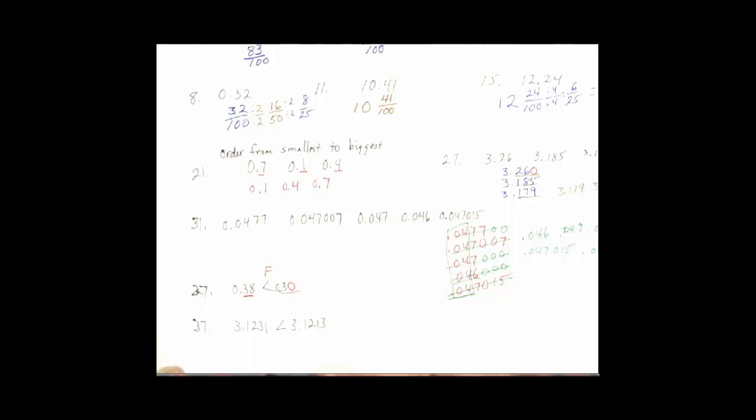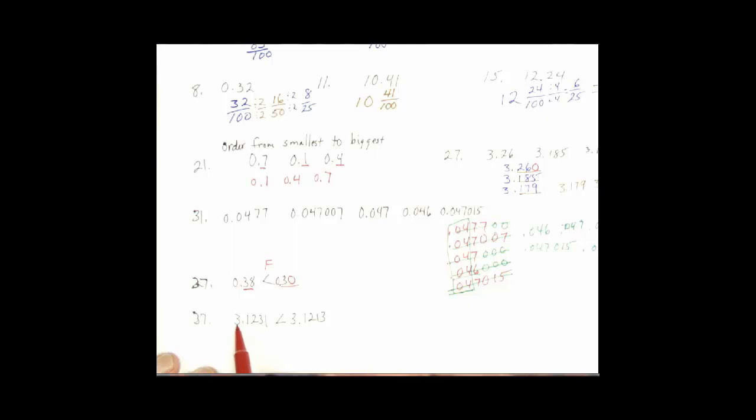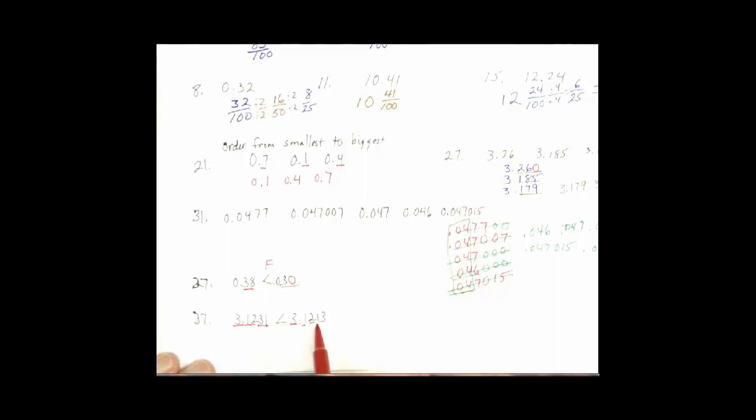If we line them up, we can compare. So on problem 37, I have 3.1231, 3.1213. So again, I would kind of compare each number at a time. Three threes, that's the same. One, one, that's the same. Two, two, that's the same. And so now we're comparing 31 to 13.